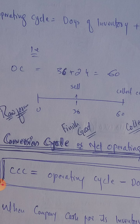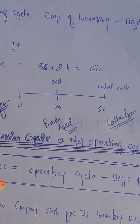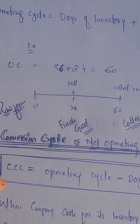So, OC equals 36 plus 24. The 24 comes from deducting 36 from 60 — that is, 34 to 36 days until the product is available and sold out, and then the customer has purchased on credit and will repay after 24 days. When we add these together, 36 plus 24 equals 60. So this company's operating cycle is 60 days. This means the company takes 60 days to convert its inventory — from raw material to finished good to sale and cash collection.